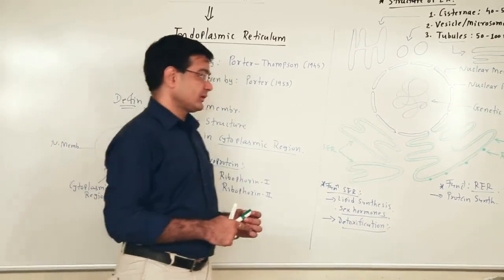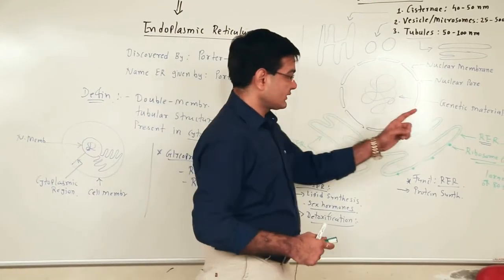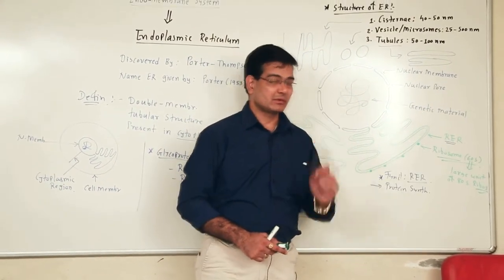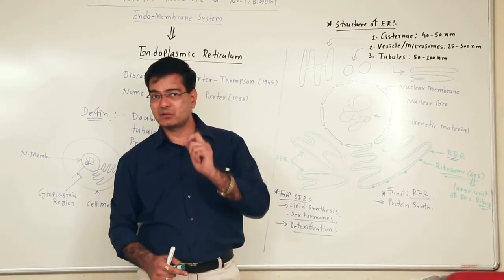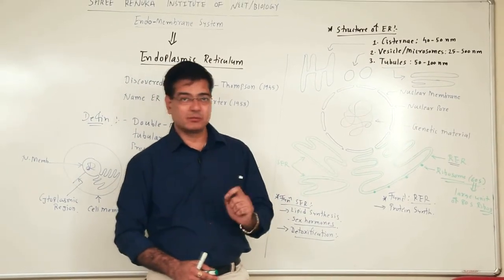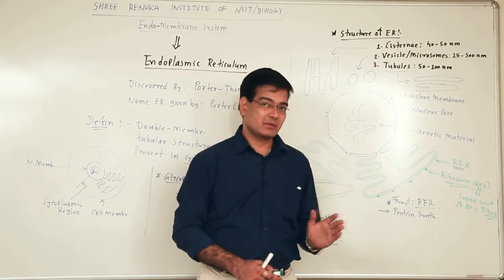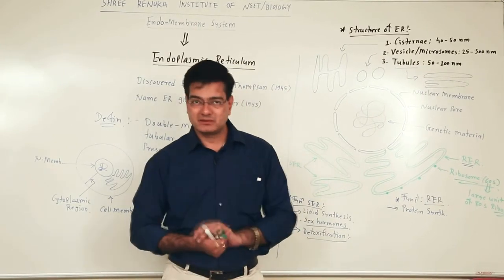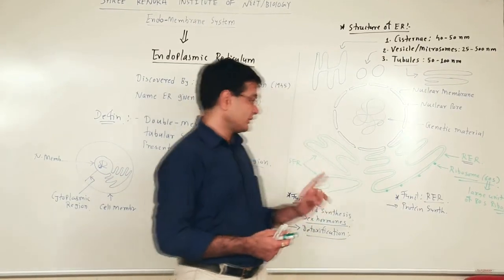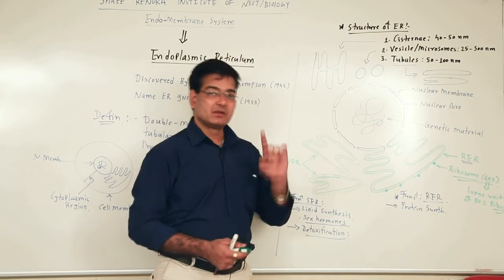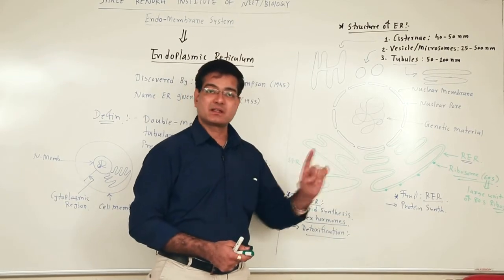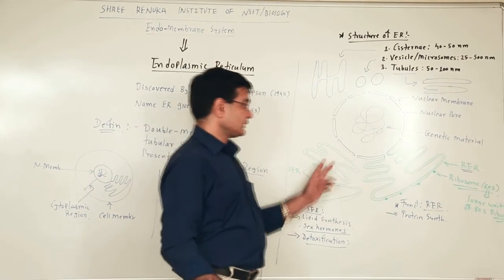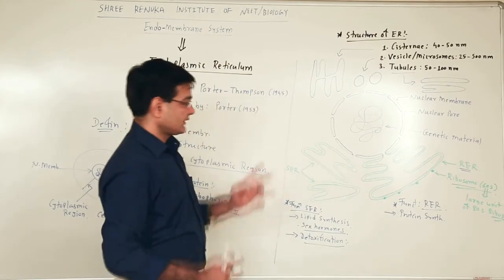Regarding the site of origin of rough endoplasmic reticulum: the rough ER develops or evolves from the nuclear membrane or from the cytoplasmic membrane. Smooth endoplasmic reticulum develops from rough endoplasmic reticulum. This is how rough and smooth endoplasmic reticulum develop.